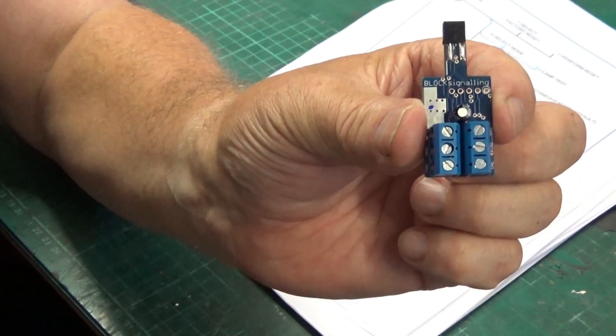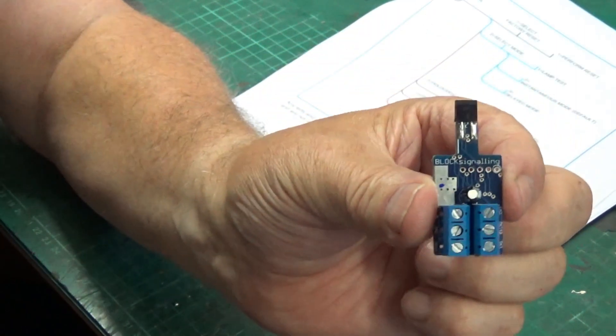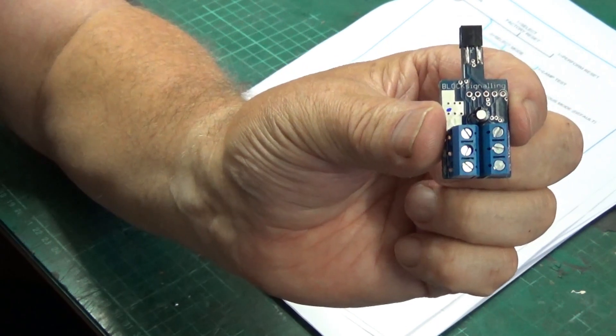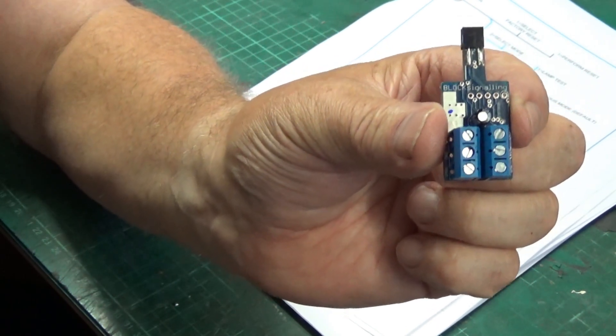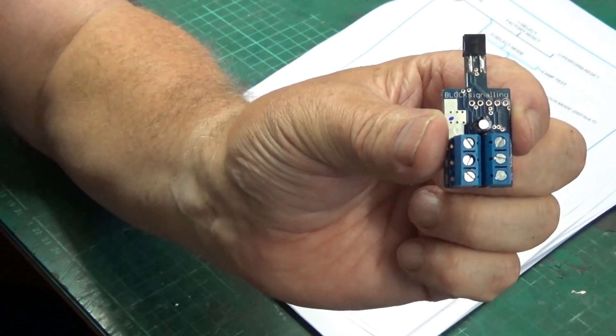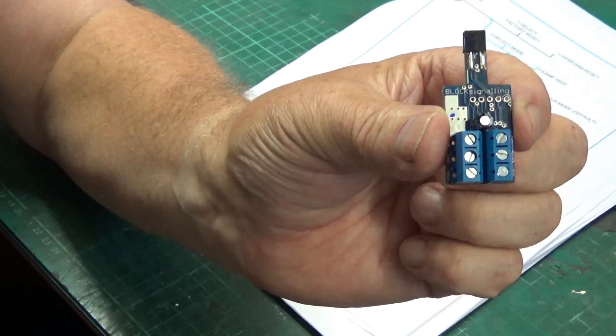You've got the instantaneous mode which comes as default. The module's already set up for the instantaneous mode, which incidentally is the mode that I use mine on. I haven't programmed mine at all. I'm quite happy with mine set in the default mode. Then you've got a delayed mode.